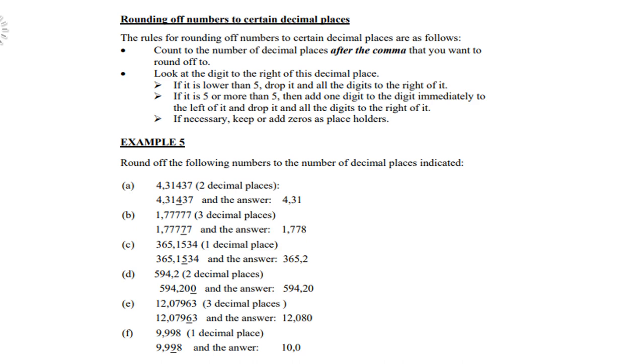If it is a 5 or more, then add one digit to the digit immediately to the left of it and drop it and all digits to the right of it. If necessary, keep or add zeros as placeholders.